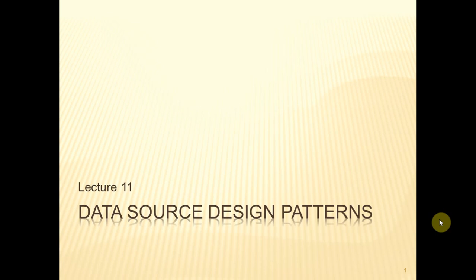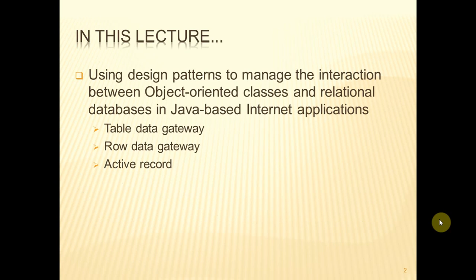Good afternoon and welcome to the last lecture of the module, lecture 11 about data source design patterns. Last week we looked at a few design patterns and this week we're going to continue that theme but focus particularly upon those design patterns that apply to the interaction between object-oriented systems and relational databases. We're going to look at three patterns in particular: table data gateway, row data gateway, and active record.